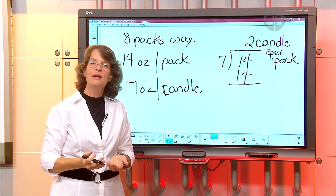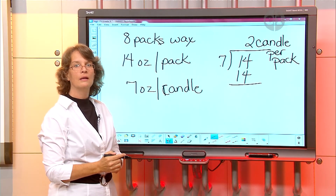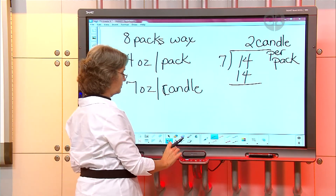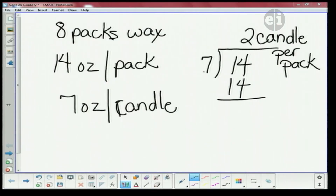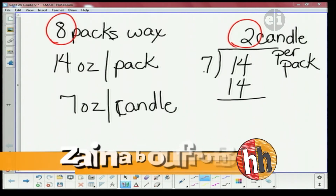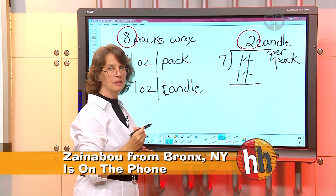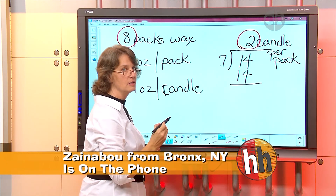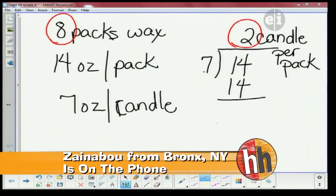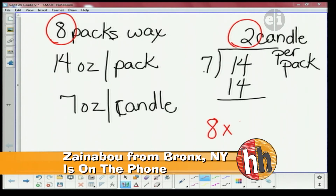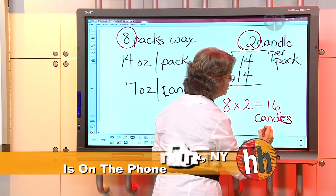Now with that two candles per pack, I have eight packs. How am I going to find out how many candles I can make? We're going to take this two and this eight and multiply them. So what is eight times two? Eight times two is 16. So how many candles total can Jasmine make? 16 candles total.